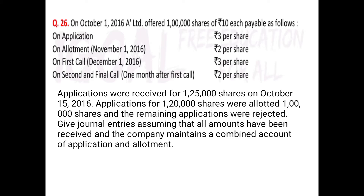Let us begin with the first question. On October 1st 2016, A Limited offered 1 lakh shares of rupees 10 each — that is the face value — payable as follows: on application 3 per share; on allotment due on 1st November 2016, 2 per share; on first call December 1st 2016, 3 per share; and on second and final call January 1st 2017, 2 per share. Combining: 3+2+3+2 = 10 rupees, equal to face value, so this is issue of shares at par.